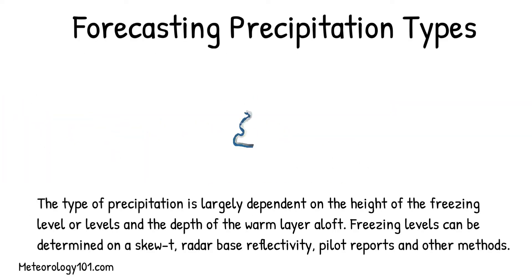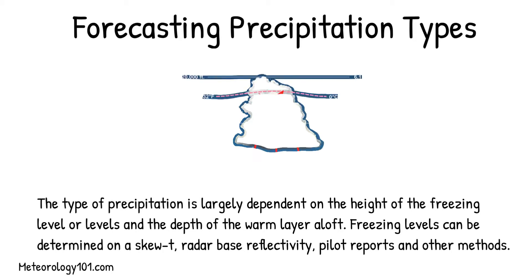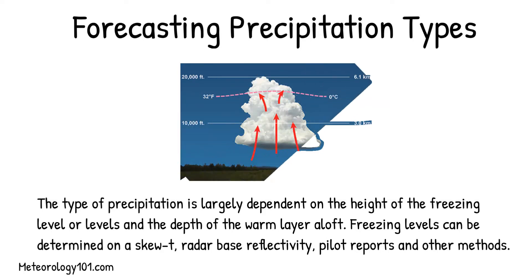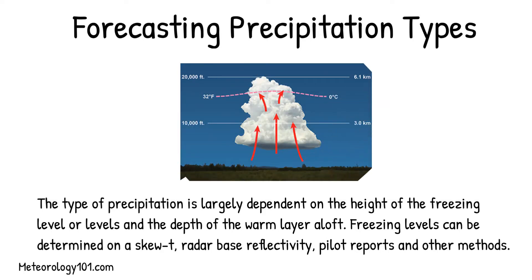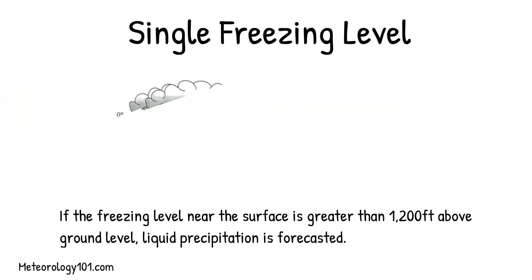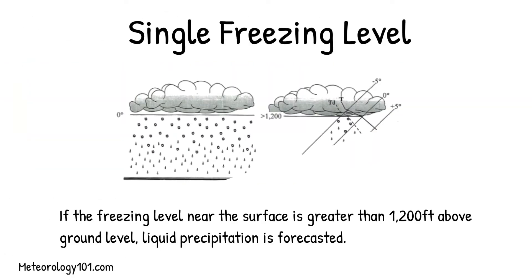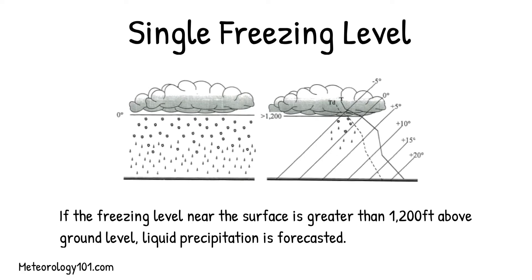The type of precipitation is largely dependent on the height of the freezing level or levels and the depth of the warm layer aloft. Freezing levels can be determined on a SKU-T, radar-based reflectivity, pilot reports and other methods. If the freezing level near the surface is greater than 1,200 feet above ground level, liquid precipitation is forecasted.